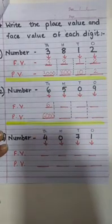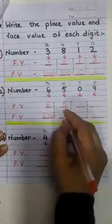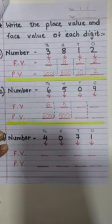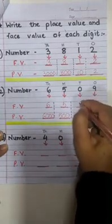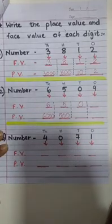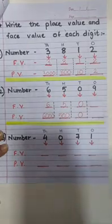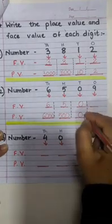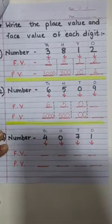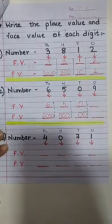Now, face value of 5, 5 as it is, but the place value is 500. The face value of 0 remains 0. And here, the place value will also be 0 because 0, when one 0 is added to it, it does not make any difference. So, we can also write only 0.